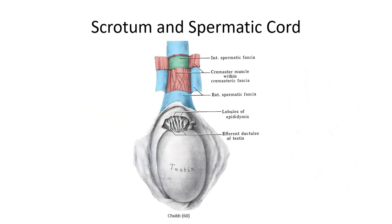To summarize, the components of the spermatic cord are embedded in the obliterated processus vaginalis and encircled by three fascial layers, like insulation around a wire, with the cremasteric muscle sandwiched between the external and internal spermatic fascial layers.